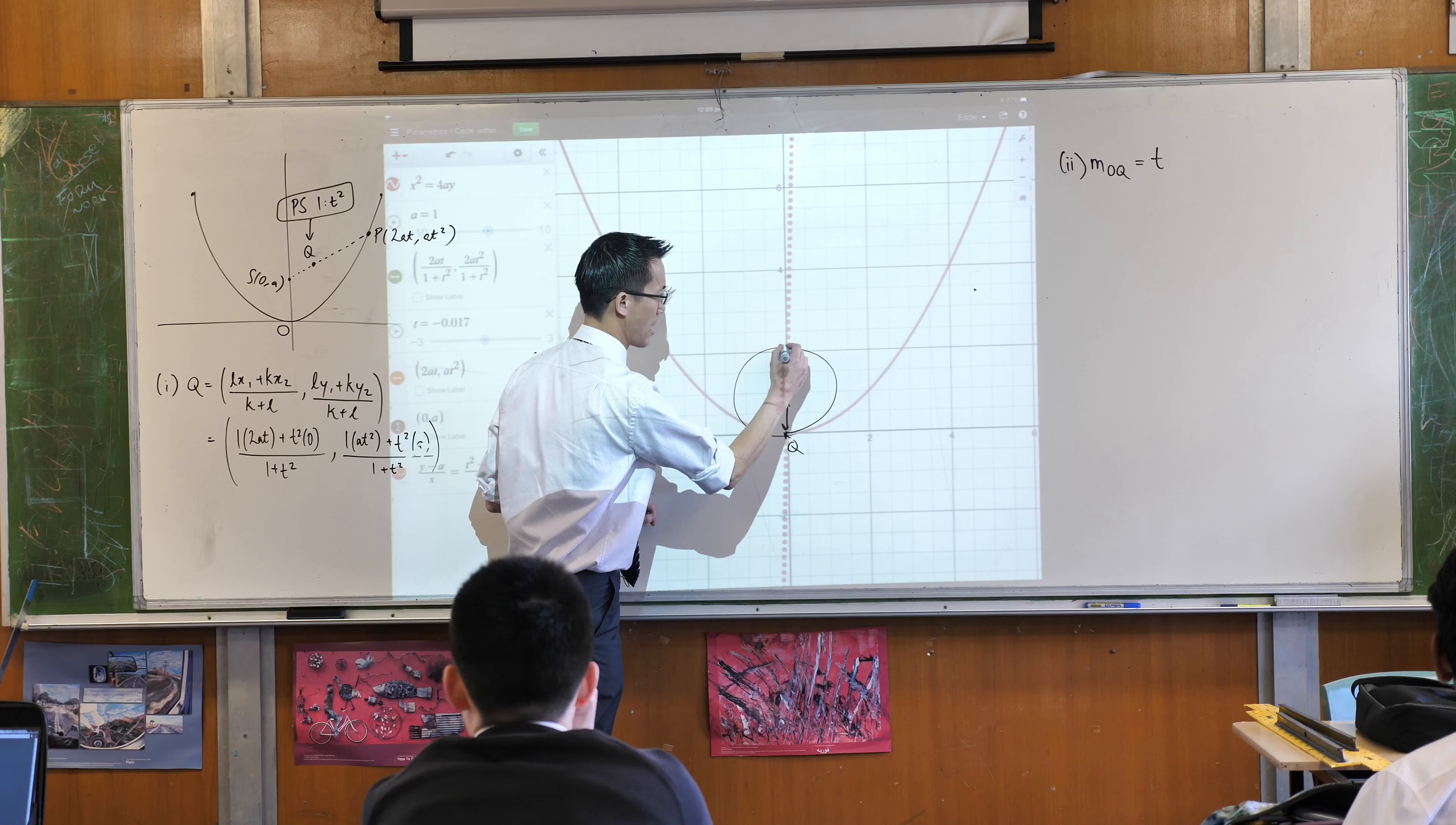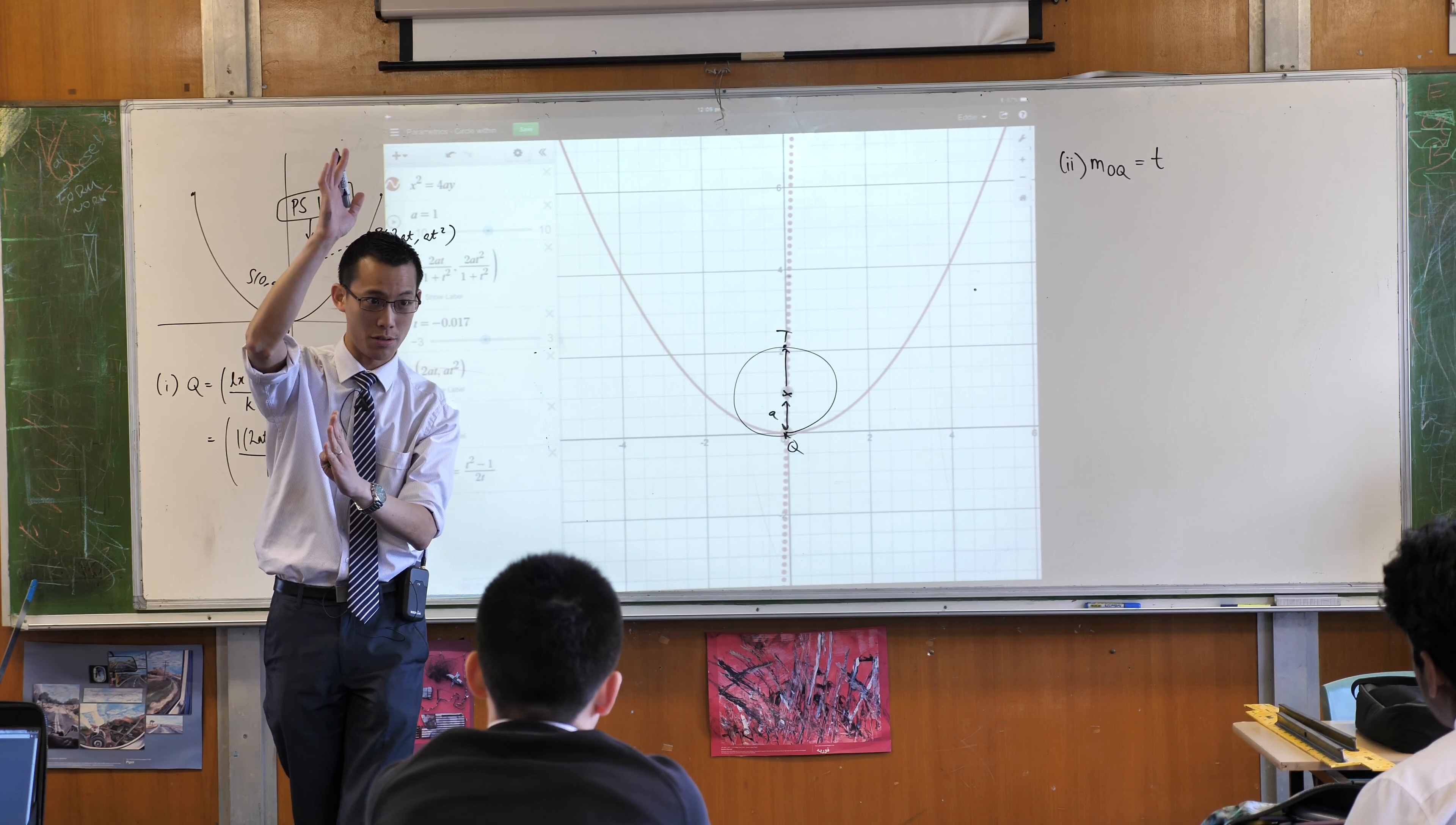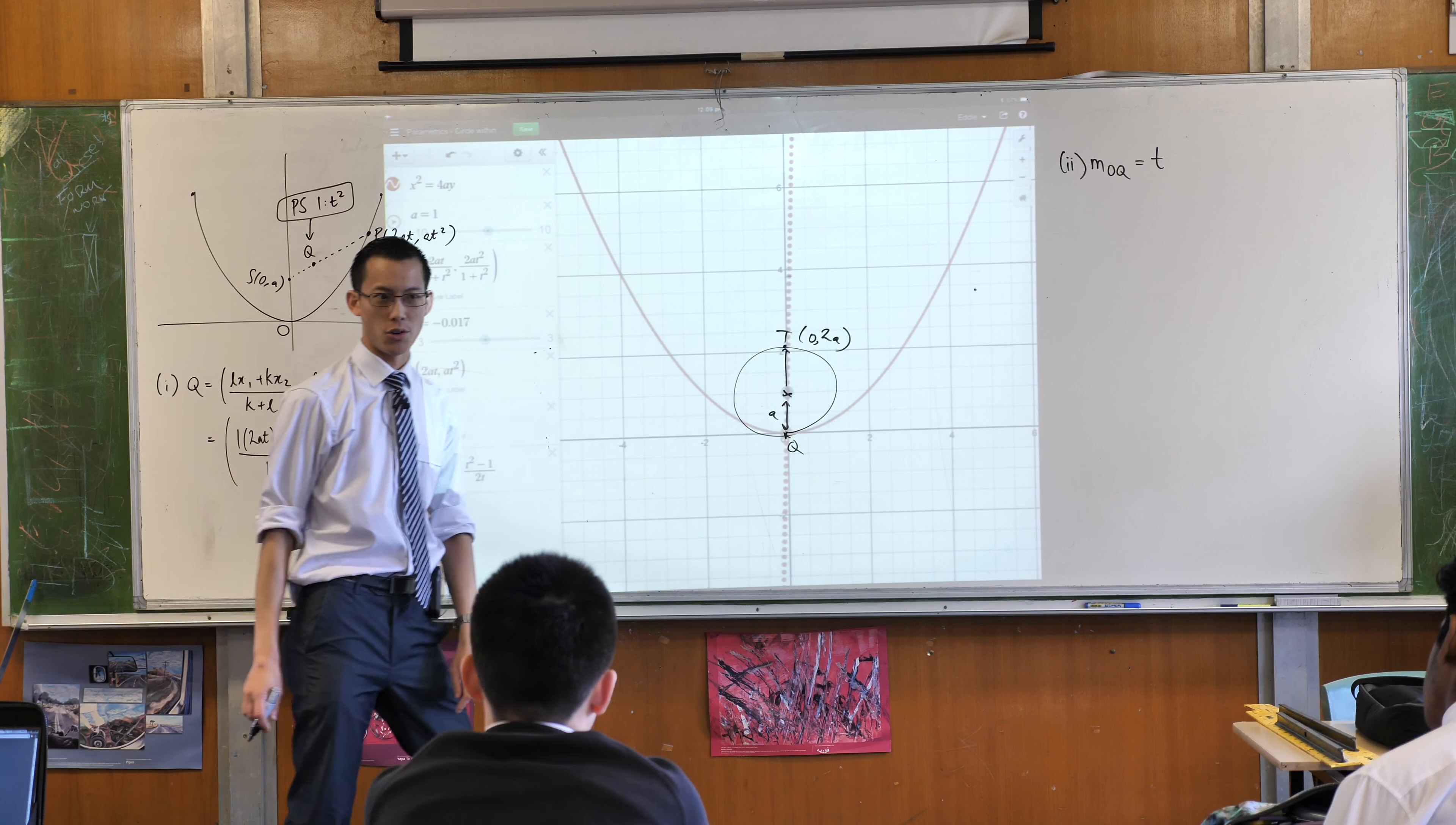I'm going to call this, I'm going to give it a name, I'm going to call it T. I can know what the coordinates of that point are, because that's a diameter that I have going up through the circle, right? So where's T? It's going to be 0, 2A.